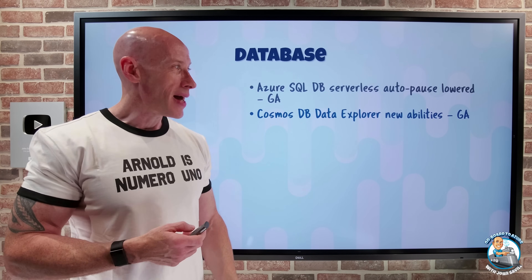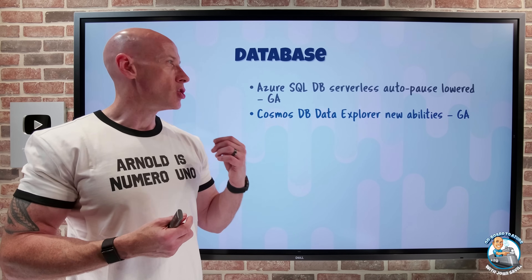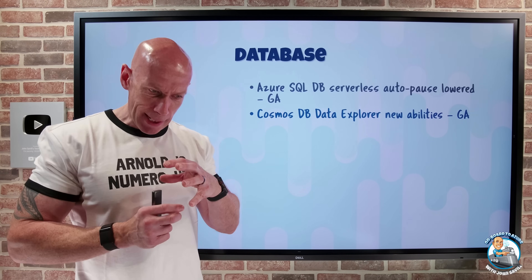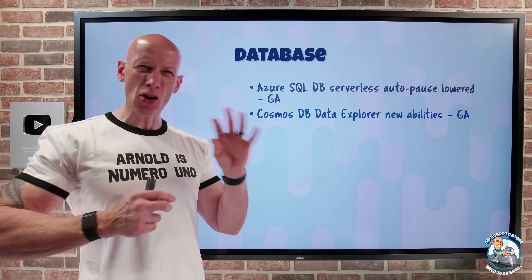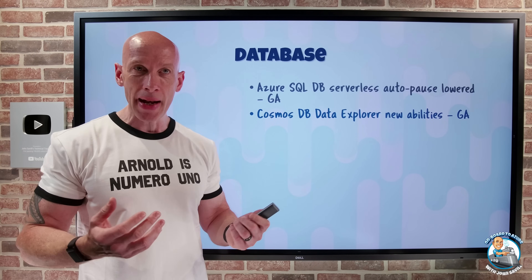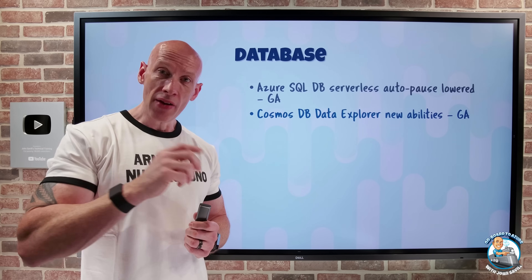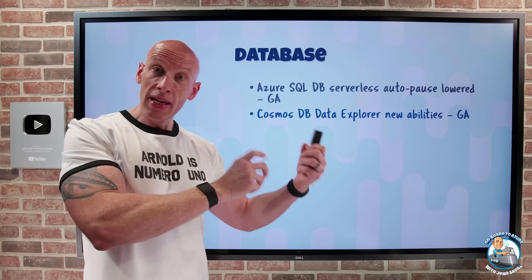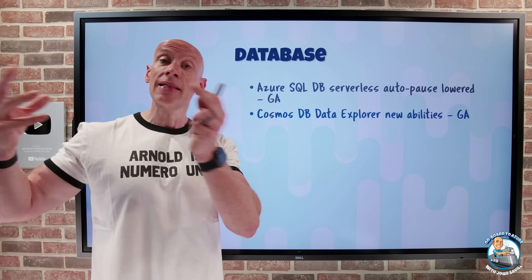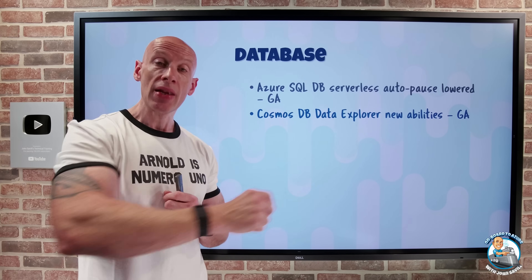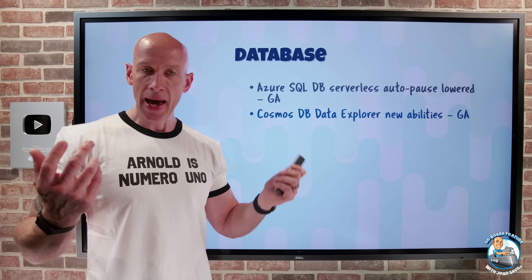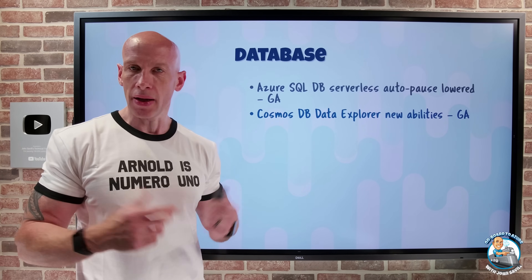Cosmos DB Data Explorer has a couple of new abilities that are in GA. One is a custom column selector — you can pick the specific columns you care about most to improve your overall experience. And now, when you apply filters, you have a filter history. So if you've applied a certain set of filters to see the data you want, at a later time you can go back through the filter history and select that again, making you that much faster and more efficient.